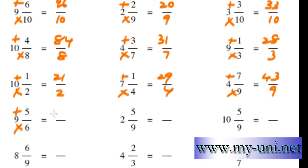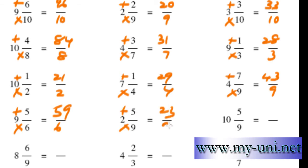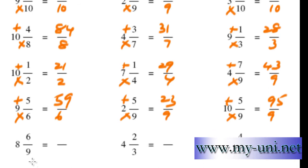9 times 6 is 54. 54 plus 5 is 59 over 6. 9 times 2 is 18. 18 plus 5 is 23 over 9. 10 times 9 is 90. 90 plus 5 is 95 over 9.